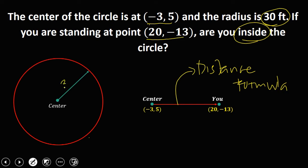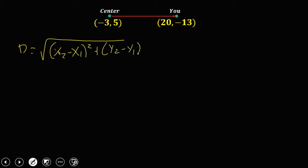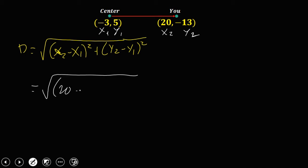To solve this using the distance formula: distance equals the square root of (x₂ minus x₁) squared plus (y₂ minus y₁) squared. From the given, we identify x₁, y₁ as the center (-3, 5) and x₂, y₂ as your point (20, -13). Substituting: x₂ is 20 minus x₁ which is negative 3, then squared.